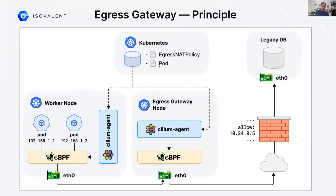So what does it look like actually? We have some pods here on a worker node in the cluster, and we have a node that we've identified as an egress gateway node. In Kubernetes, we have set up an egress NAT policy that says that for this pod to access a CIDR outside the cluster — typically we have a legacy database, for example — it needs to go through this egress gateway node. So when the pod is trying to reach out to this IP here, 10.24.0.5, the Cilium agent on the node will know that it needs to route it through the egress node.